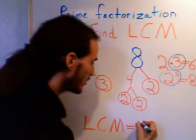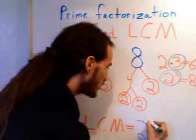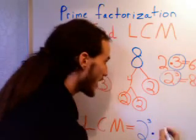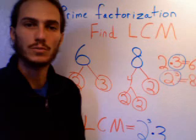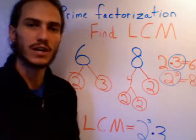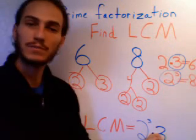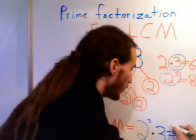Okay, so now we're going to write 2 cubed times 3, and we know that 2 cubed is 8, 2 times 2 times 2 is 8, times 3 gives us 24.